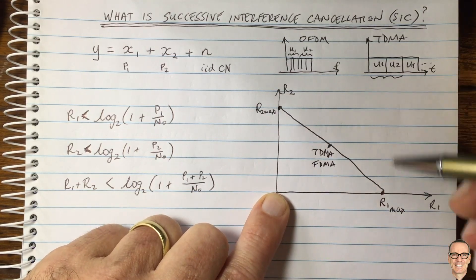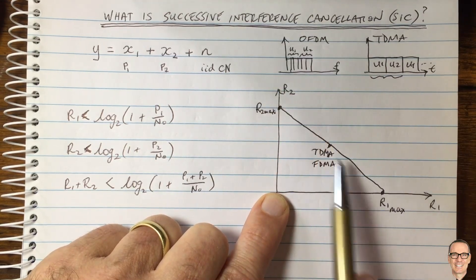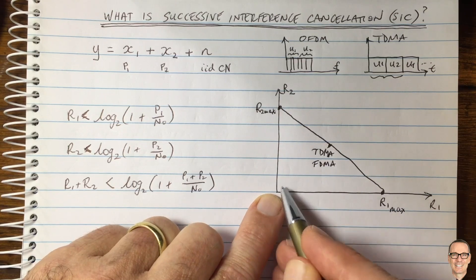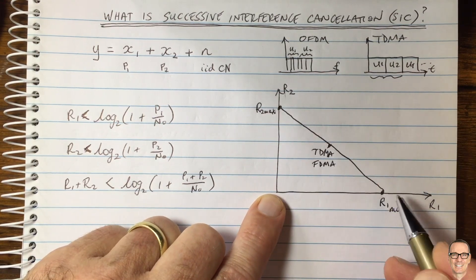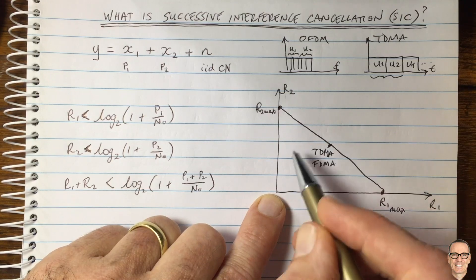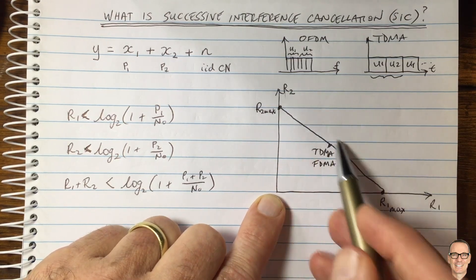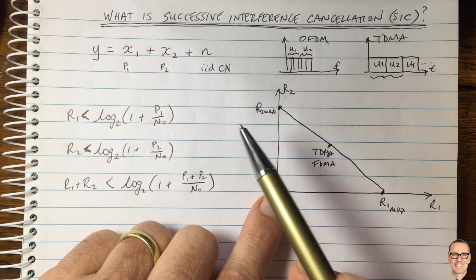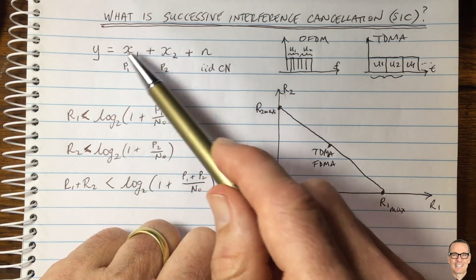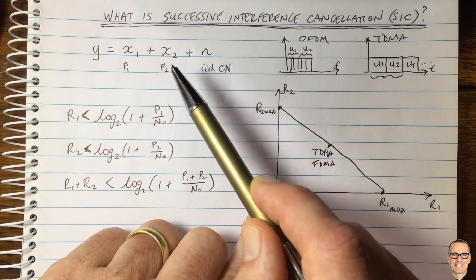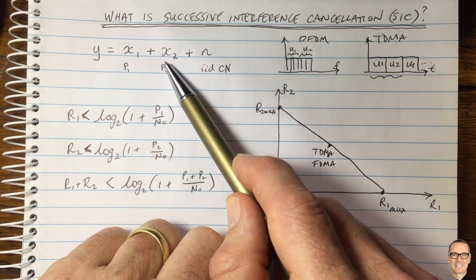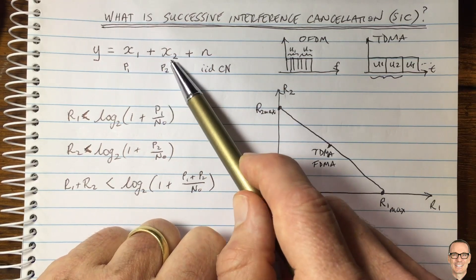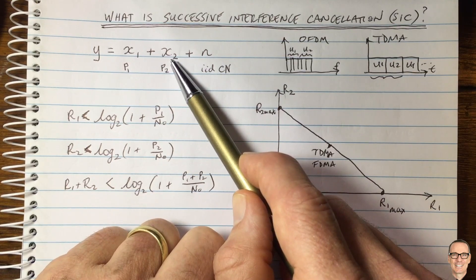Now, how does successive interference cancellation work and can we achieve a bigger combined rate? The combined rate is the sum R1 plus R2. Can we get a rate pair out in the region beyond the orthogonal line? It turns out we can. Let's think about what happens if we put power into both users at the same time — transmitting simultaneously without any particular clever scheme. These signals will interfere with each other.